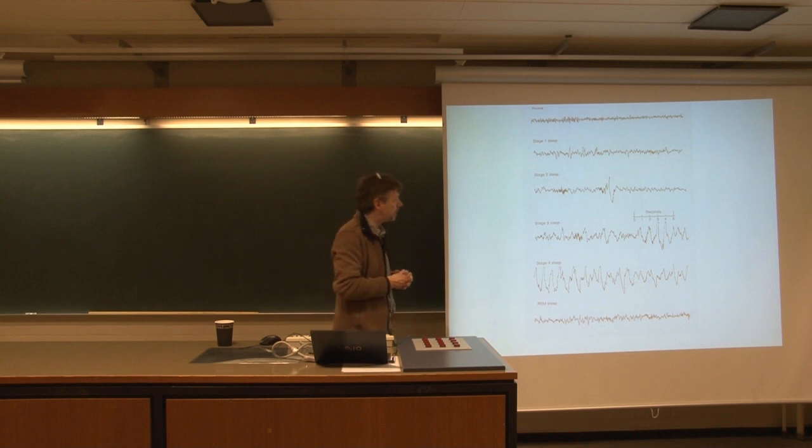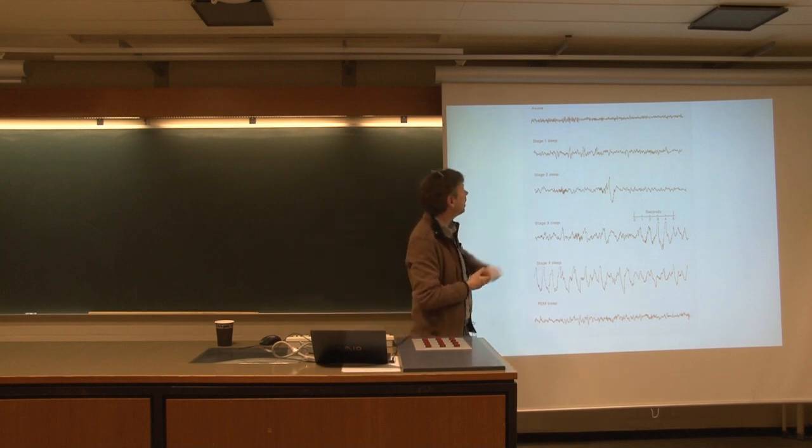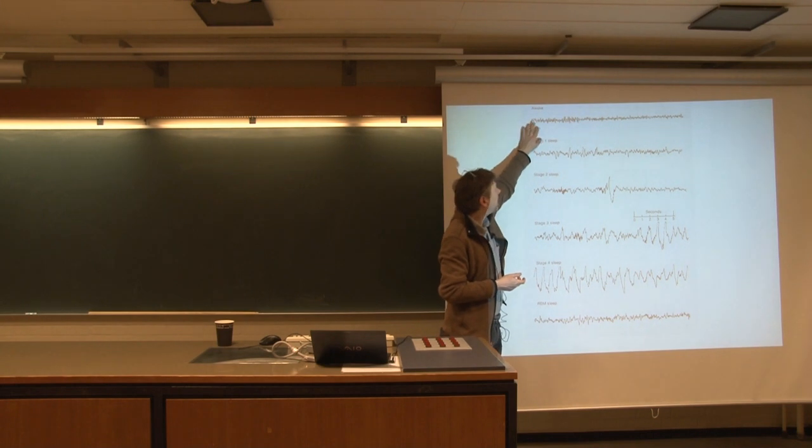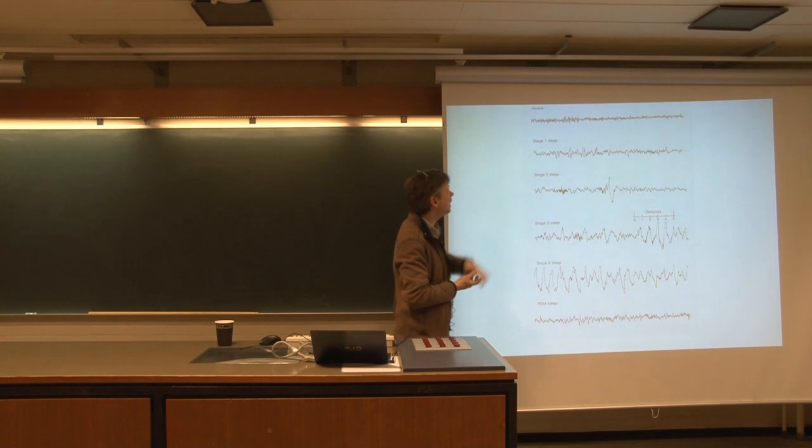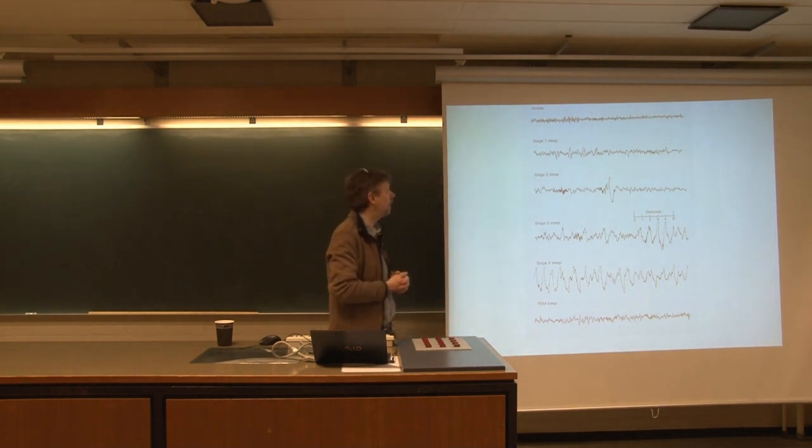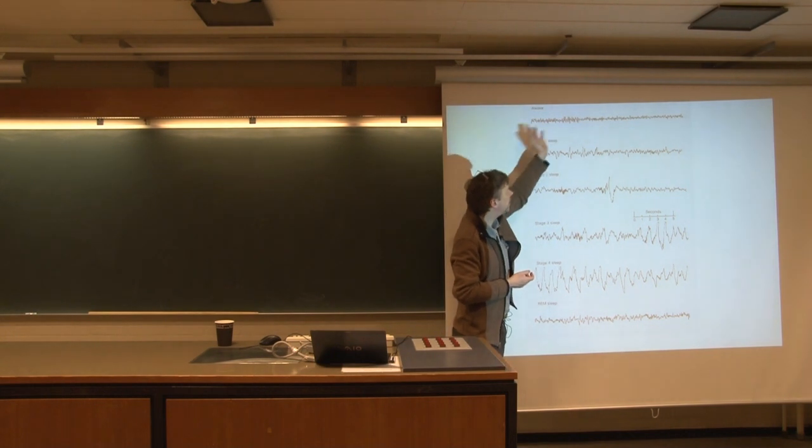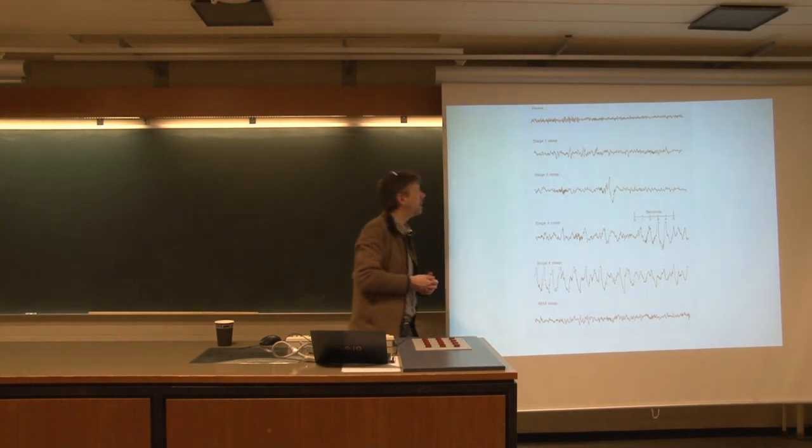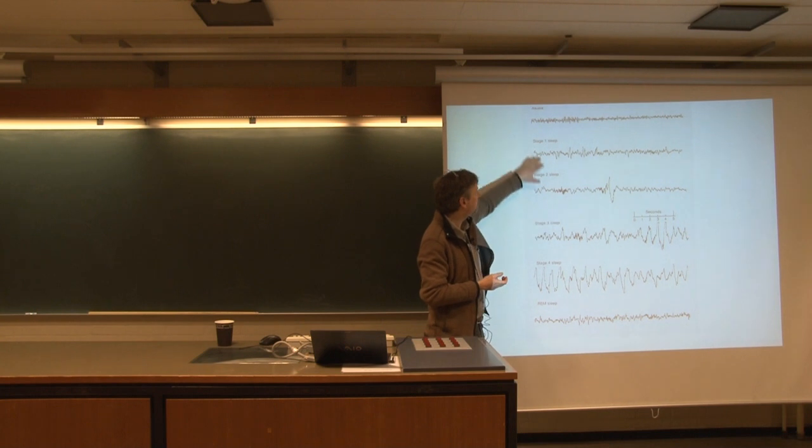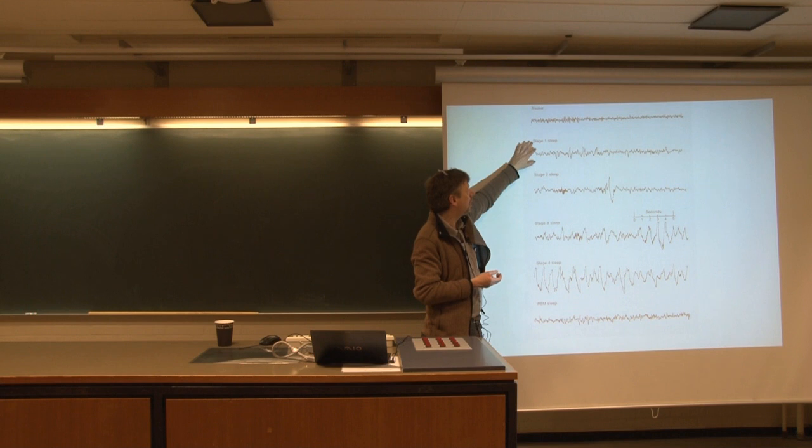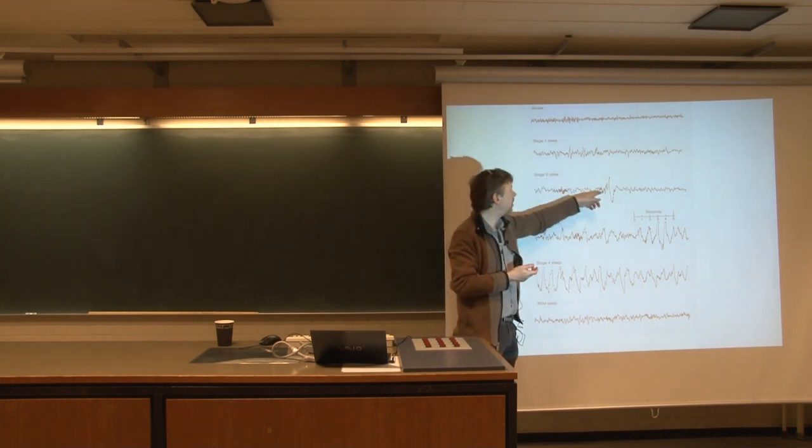So this is just to give you some examples of what it looks like. So here you have an awake person and you don't really, at least with the naked eye, see any clear rhythmicity. It's all pretty low amplitude and relatively disorganized without any clear features in it. Then as you begin to go to sleep, as you can see here, stage one, which means that you're sort of in between being awake and sleeping.